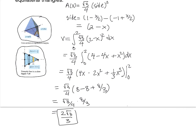Watch out for cases where the cross-sections are not circles. The reason you use πr² is because your cross-sections are circles — when they're not, use the appropriate area formula and add up all the pieces.